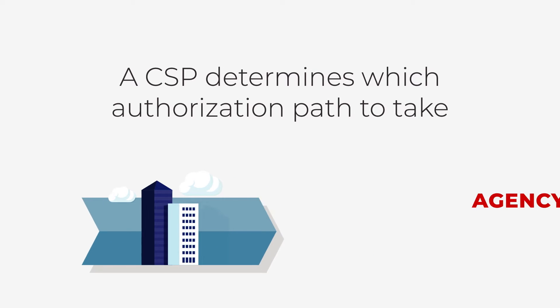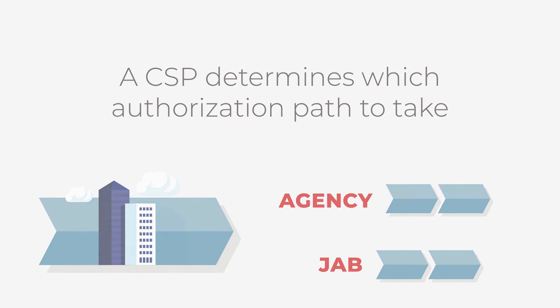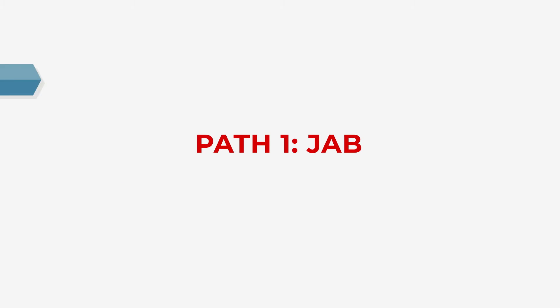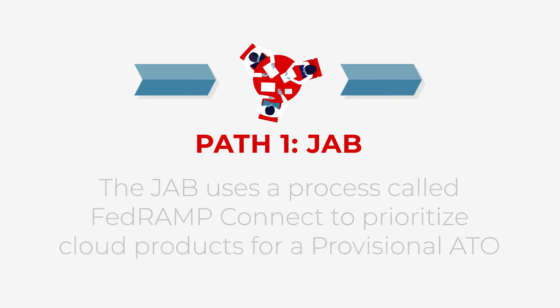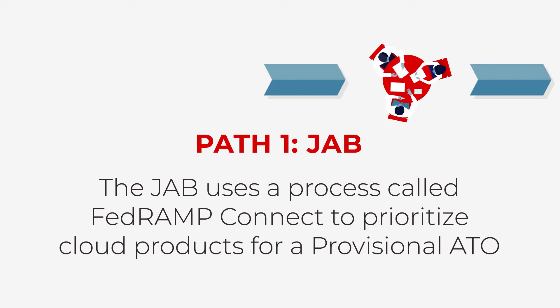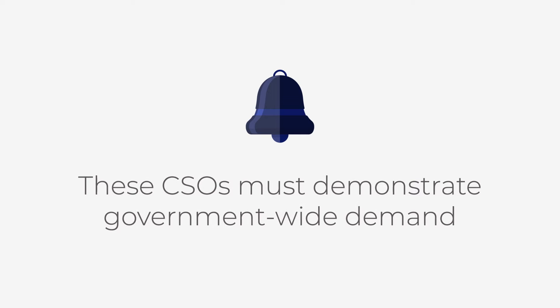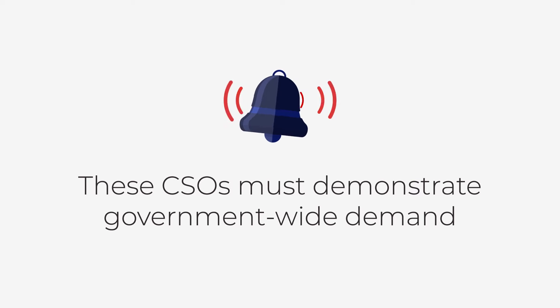A CSP determines which authorization path to take. For the first path, the JAB uses a process called FedRAMP Connect to prioritize cloud products for a provisional ATO. These CSPs must demonstrate government-wide demand.